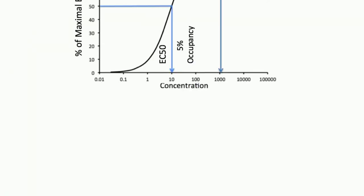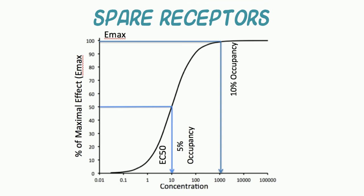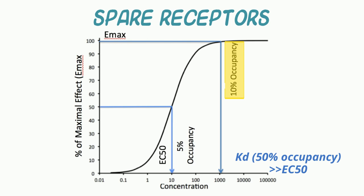Let's now move to our final receptor phenomenon of relevance to the clinician: spare receptors. Not occurring as an adjustment to prior drug administration, this phenomenon is a built-in feature of the receptor system itself, and it can vary considerably between species. As shown in the log-dose effect curve, with some drugs the maximum biological effect is achievable at much lower doses or concentrations than would be expected based upon the receptor's binding affinity. Another way of saying this is that the concentration associated with the KD is much greater than that of the EC50.